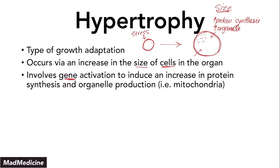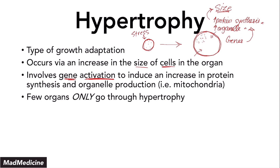Hypertrophy involves gene activation. Once you activate your genes, you are going to increase in size by increasing your protein synthesis and increasing the number of organelles you have. The way hypertrophy functions is by increasing gene activation, which drives protein synthesis and organelle production, leading to an increase in size. When it comes to hypertrophy, this is a pathway that only a few organs and tissues in our body undergo. Hypertrophy alone is a very rare process that happens in very few and very specific tissues.